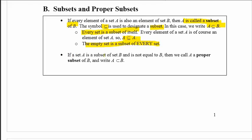If set A is a subset of set B and it's not equal to B, then we call A a proper subset of B. The proper subset symbol looks very similar to the subset symbol, but without the bar underneath.